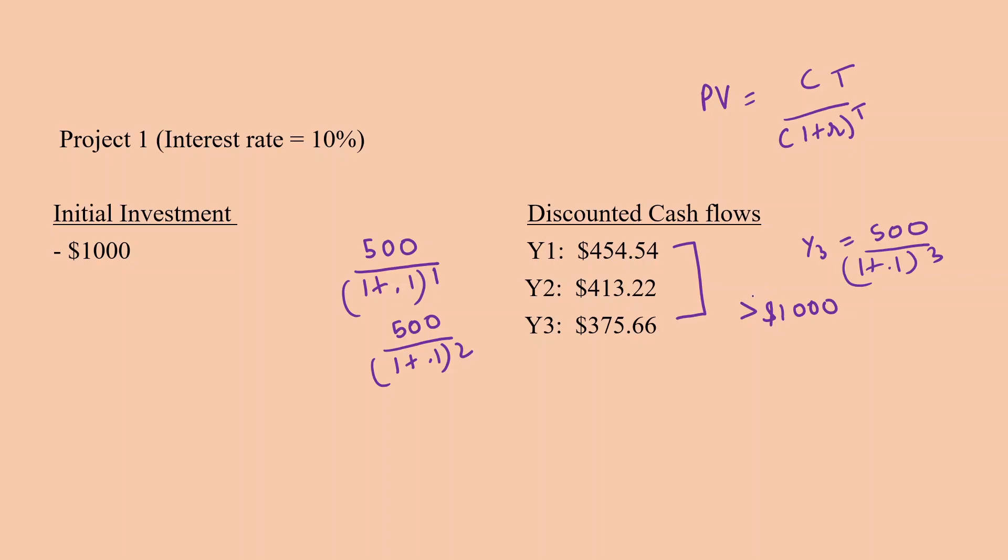So let's add up the cash flows from year one and year two. We add up the cash flows and you're going to end up getting $867.76.